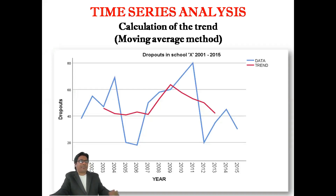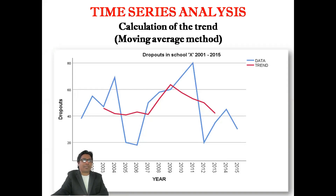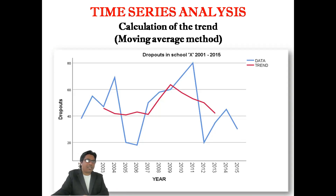Here is the graph, or chart, of the time series analysis. The purpose of this calculation was to find the trend value so that the fluctuating data can be smoothed out. As you can see in the graph, the data value is quite fluctuating — going up and down. But if you compare it with the trend value, the trend is less fluctuating because it gives the average changes in the particular phenomenon.